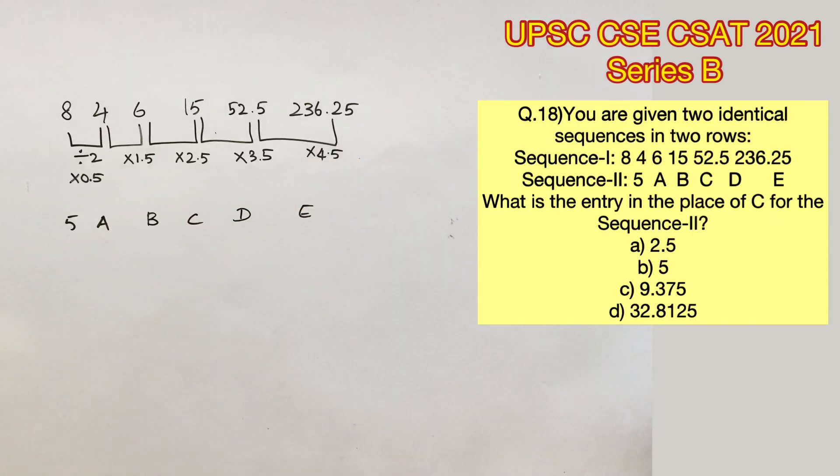Now that we have found out the pattern, we have to apply it on the second sequence. Given that the first term is 5, so the second term should be 5 into 0.5, which is further multiplied by 1.5 and then 2.5, 3.5, 4.5 and so on.